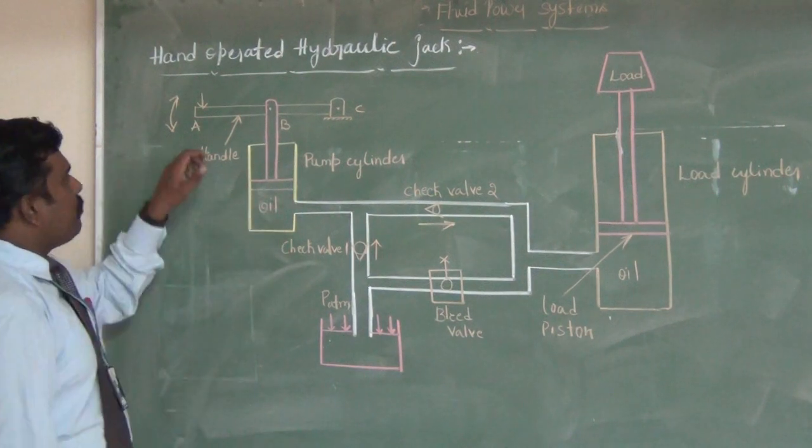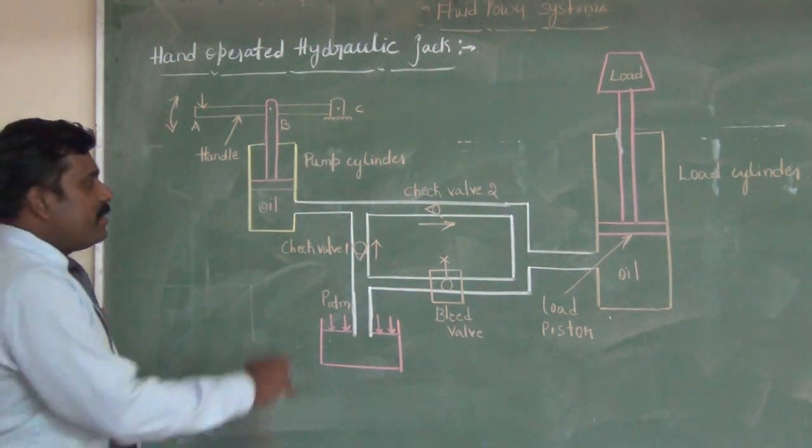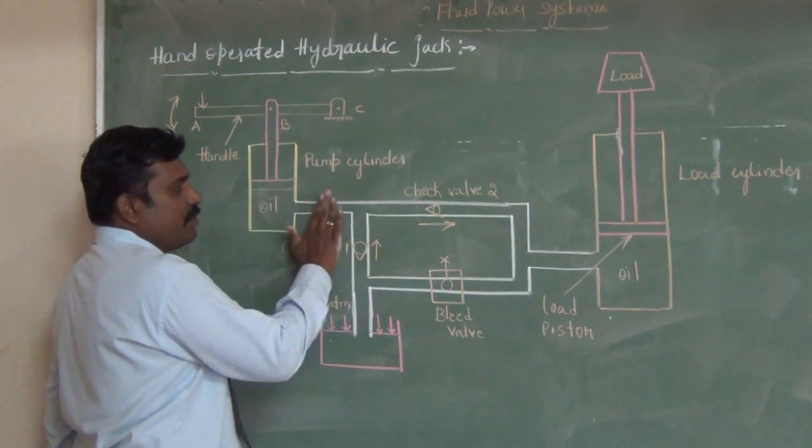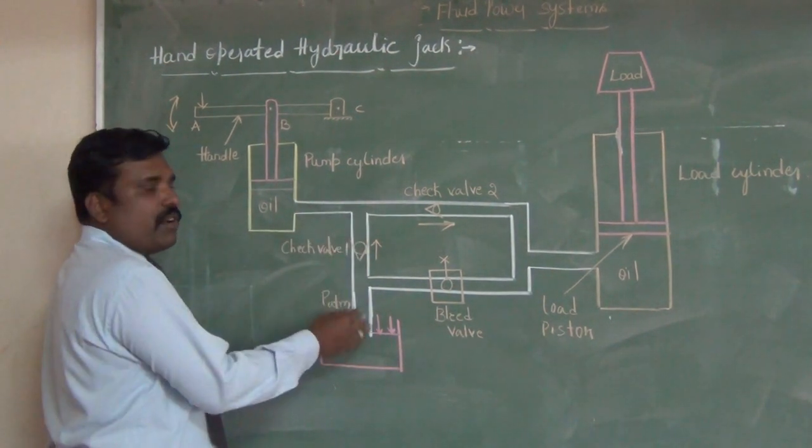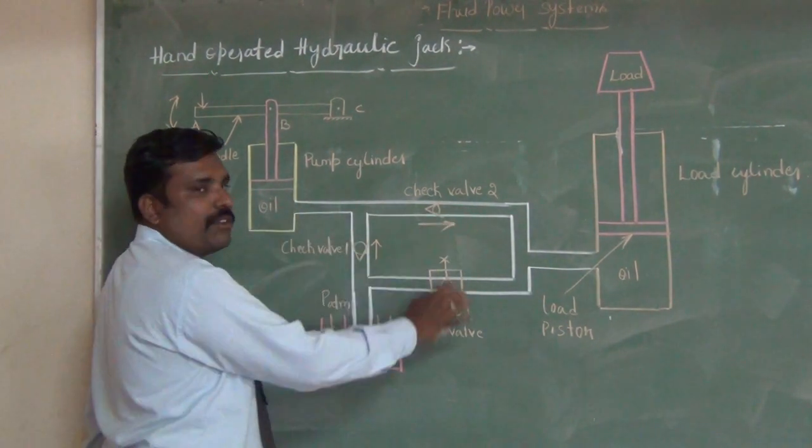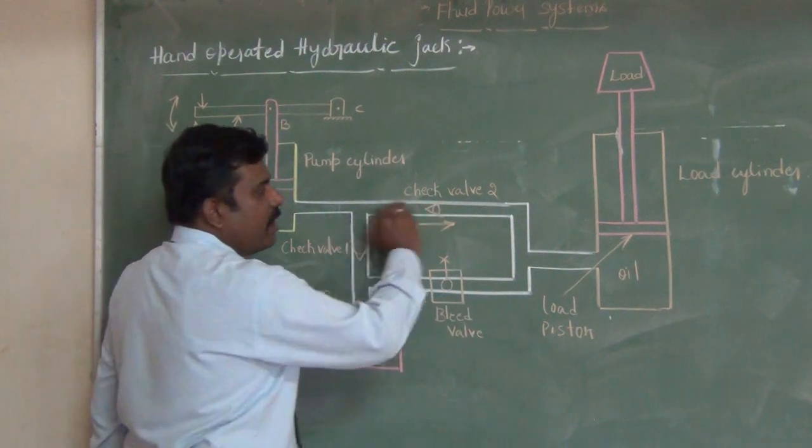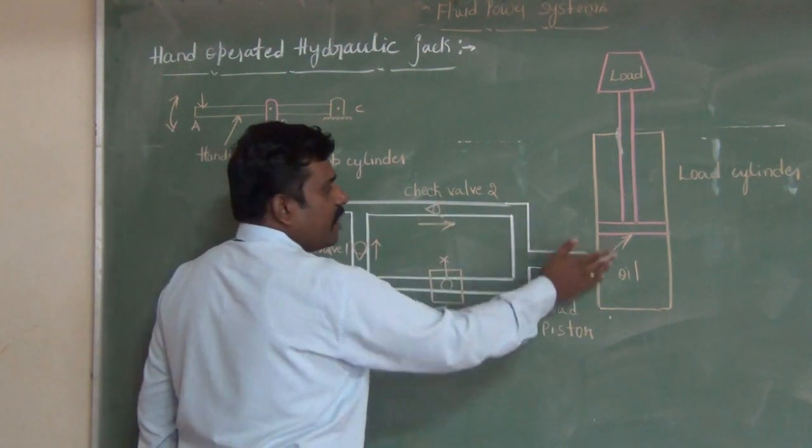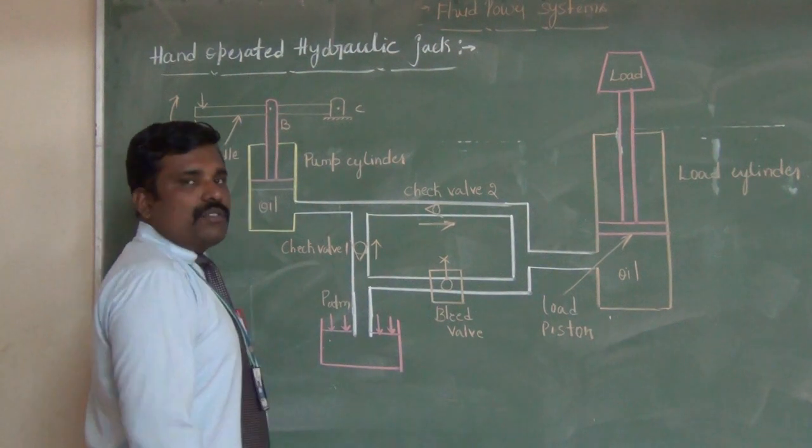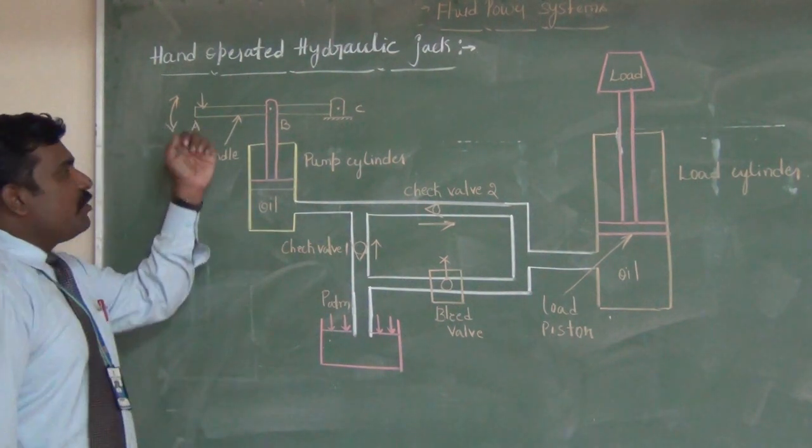When I'm going to push the handle to the other side, what happens is the oil will be pushed over here. If there is no option to go, the oil has to go to check valve two. Here the check valve will open and is going to accumulate at the bottom of the load cylinder.